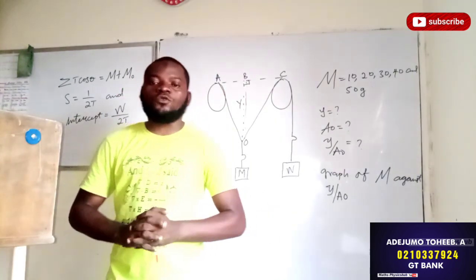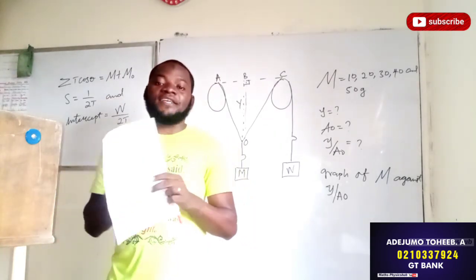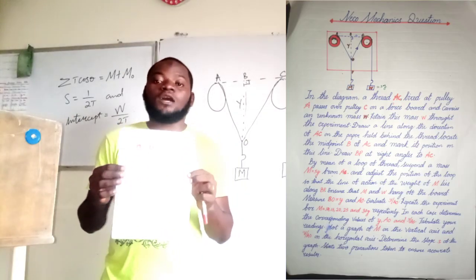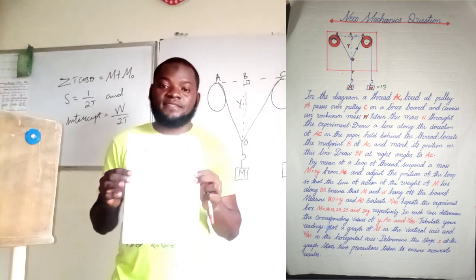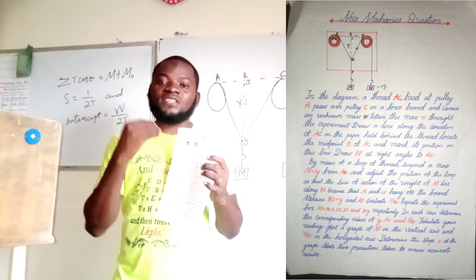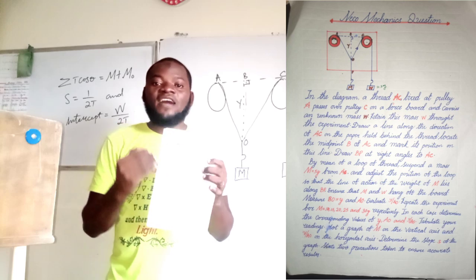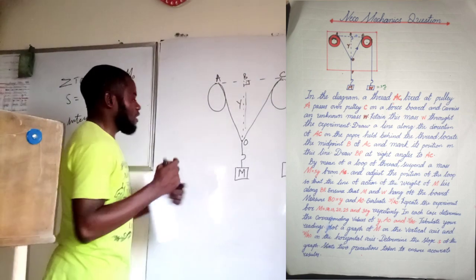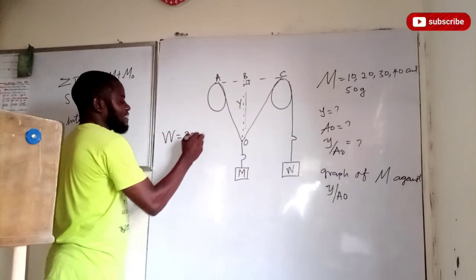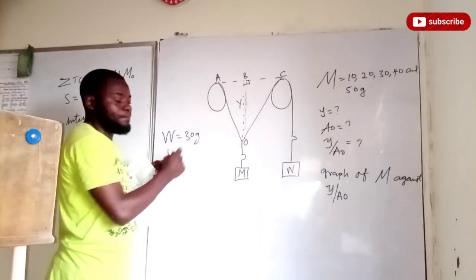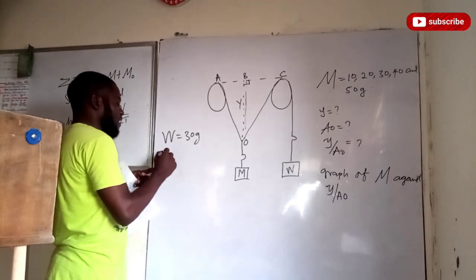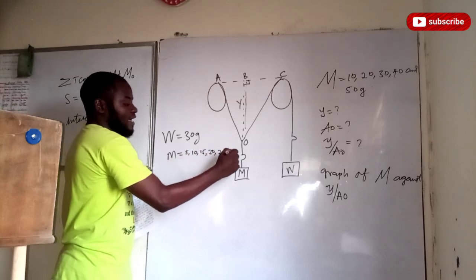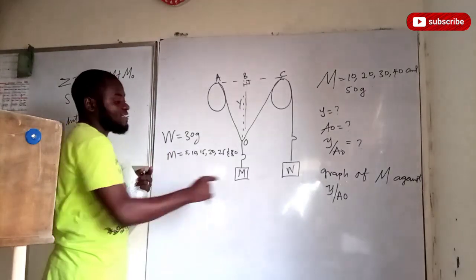Now let's go on to what we are doing today. Remember in our last video I shared this question with you, and I said this is 90% certain to be asked by NECO on this particular experiment. Now because of the shortage of apparatus I could not cater for a mass of five grams — I only have masses of 10 grams. Normally NECO requires mass W to be 30 grams, and the value of N should range from 5, 10, 15, 20, 25, and 30.